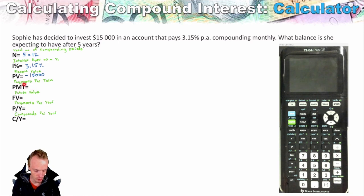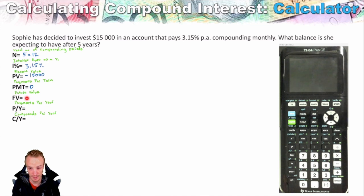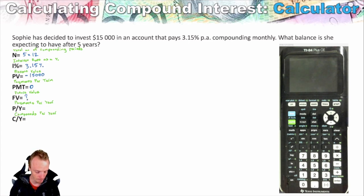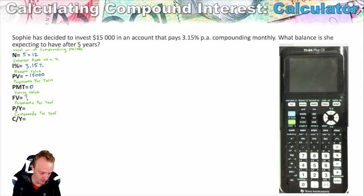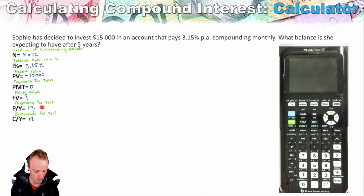PMT is how much you're actually paying the bank per term. We're not making any payments here, so this is just zero. The future value is how much you're expecting to have at the end — that's what we're calculating, so I leave that as a question mark. For P/Y, when we're not making payments, I tend to leave that the same as how often it's compounding per year. Because it's compounding monthly, it compounds 12 times per year, so I keep P/Y and C/Y both as 12.